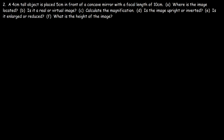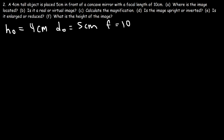Example 2: A 4 centimeter tall object is placed 5 centimeters in front of a concave mirror with a focal length of 10 centimeters. Where is the image located? The height of the object is 4 centimeters, dO is 5 centimeters, and the focal length is 10 centimeters. Let's calculate dI first using the mirror equation.